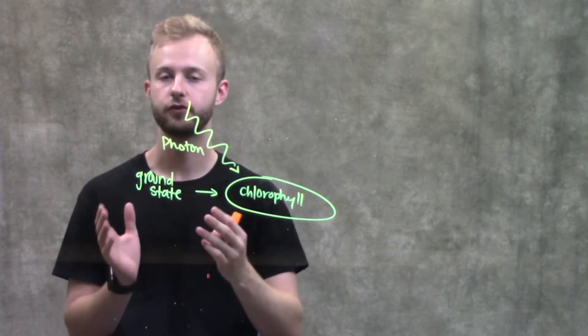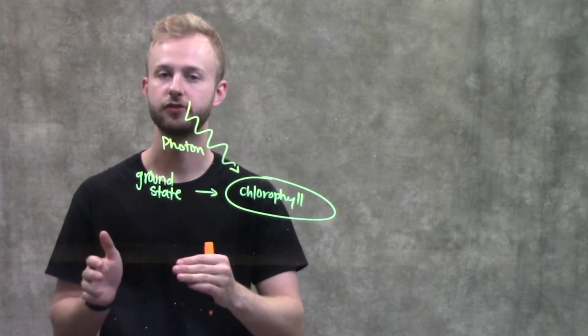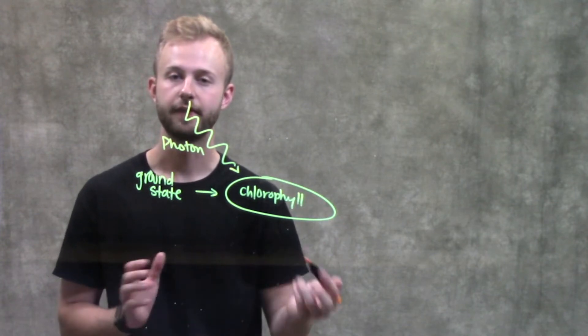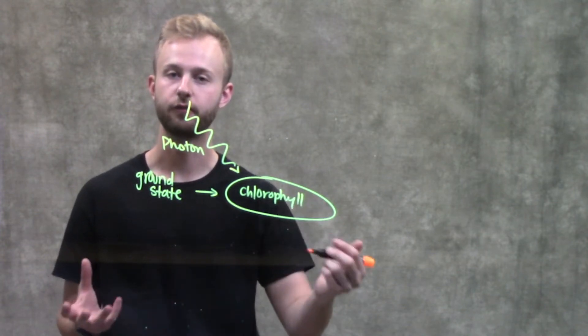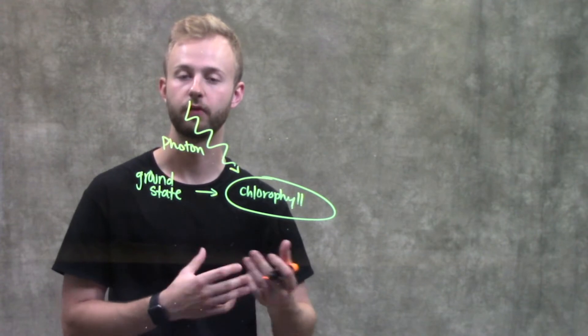Only photons that are that specific amount of energy will be able to be absorbed by the chlorophyll molecule, and that depends on the pigment itself, what wavelength they absorb and what wavelength they reflect.